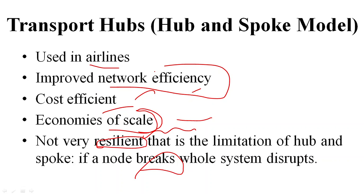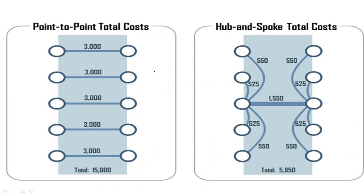The total cost involved in the hub and spoke model is just 5,850, whereas in the point-to-point model it is 15,000. That is the key difference — in point-to-point we have to keep each and every route functional, investing in each and every route.